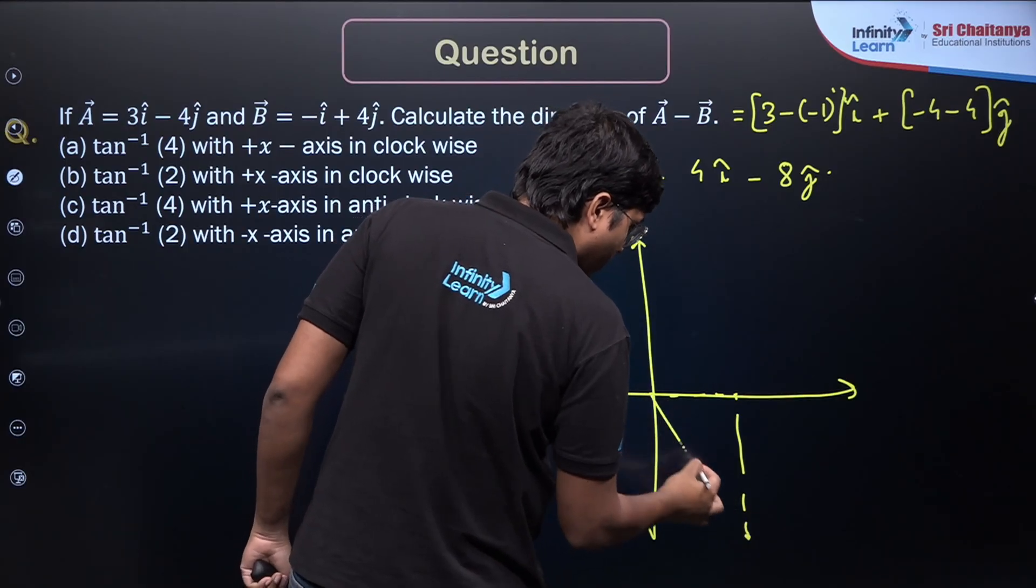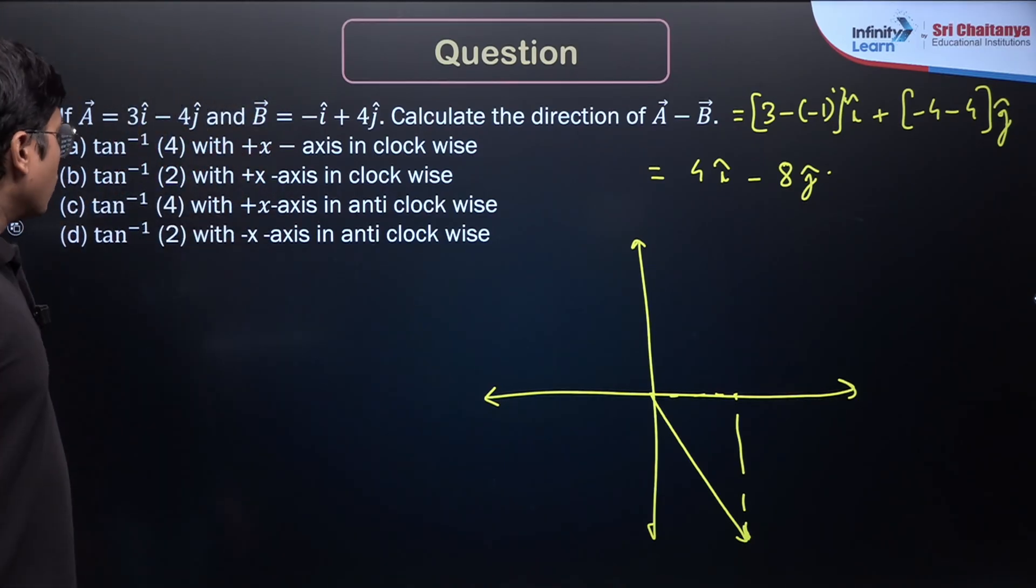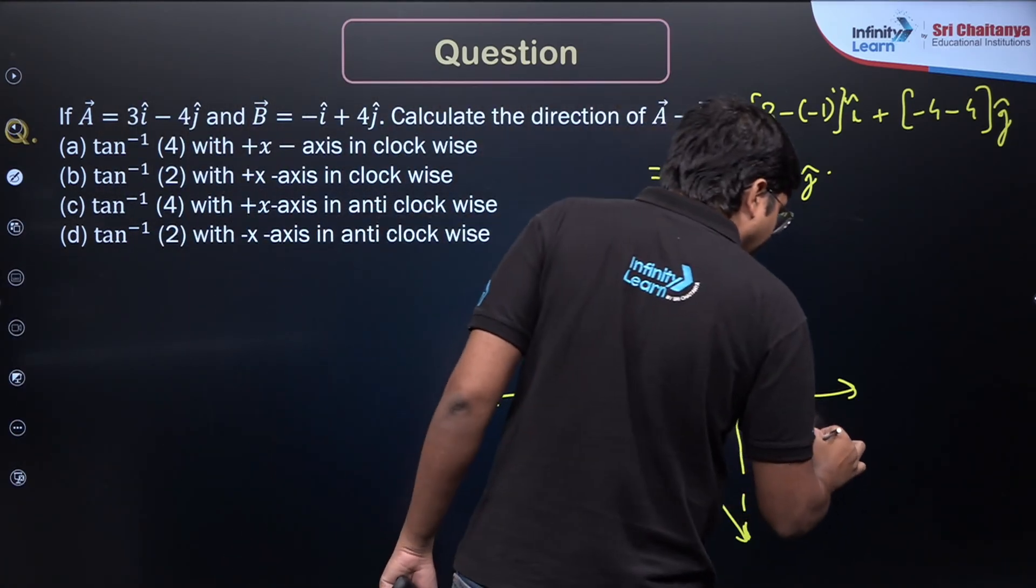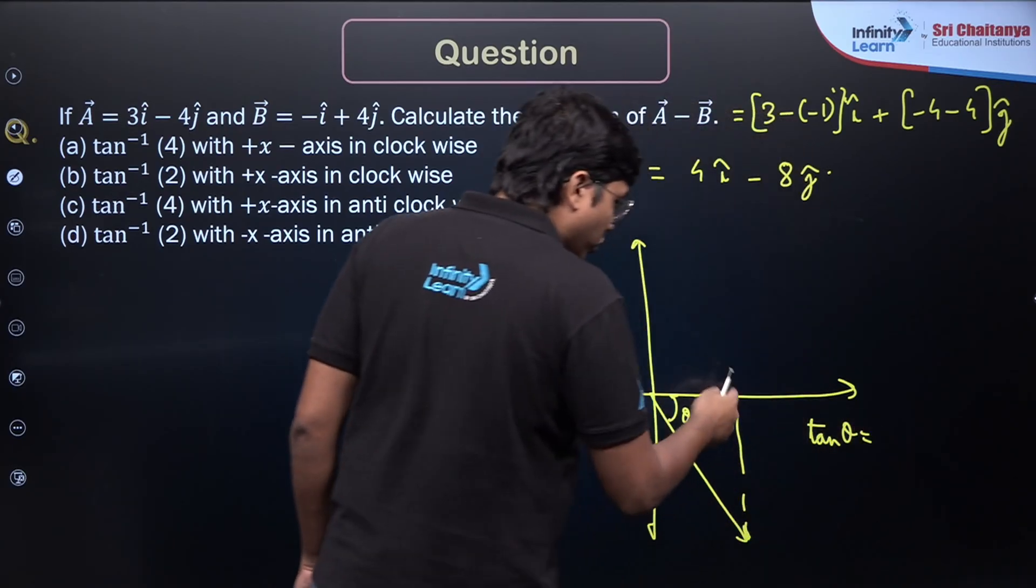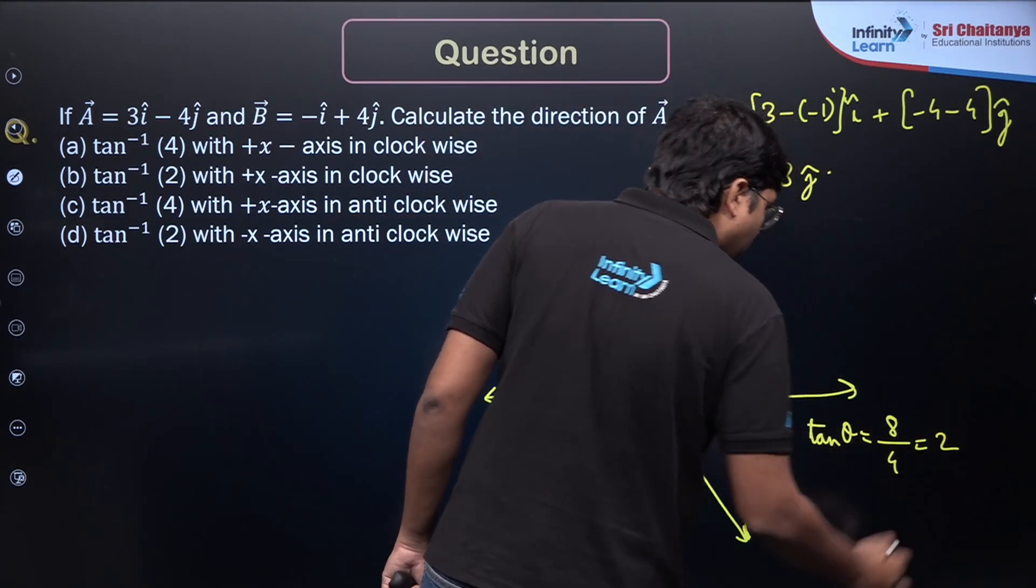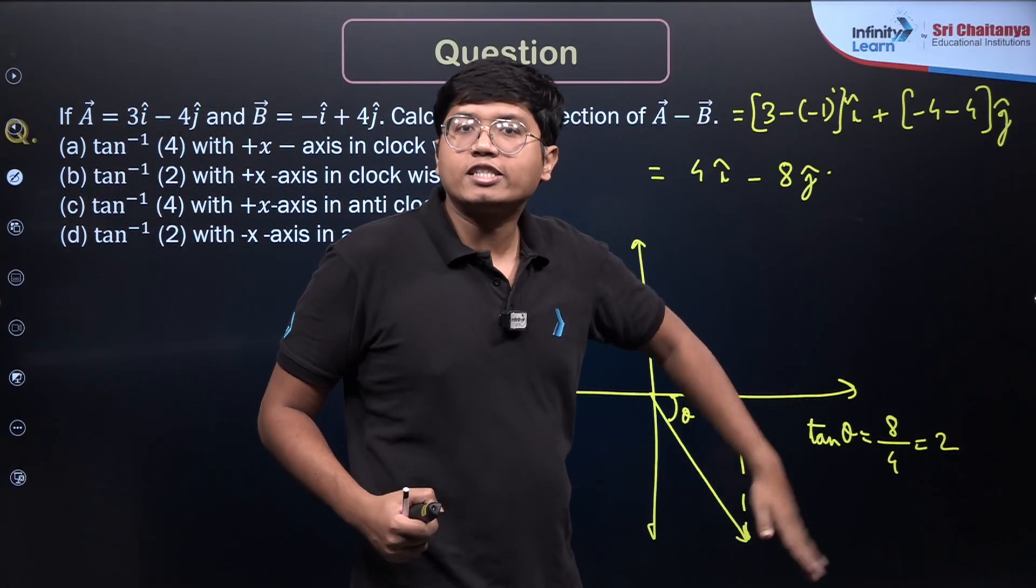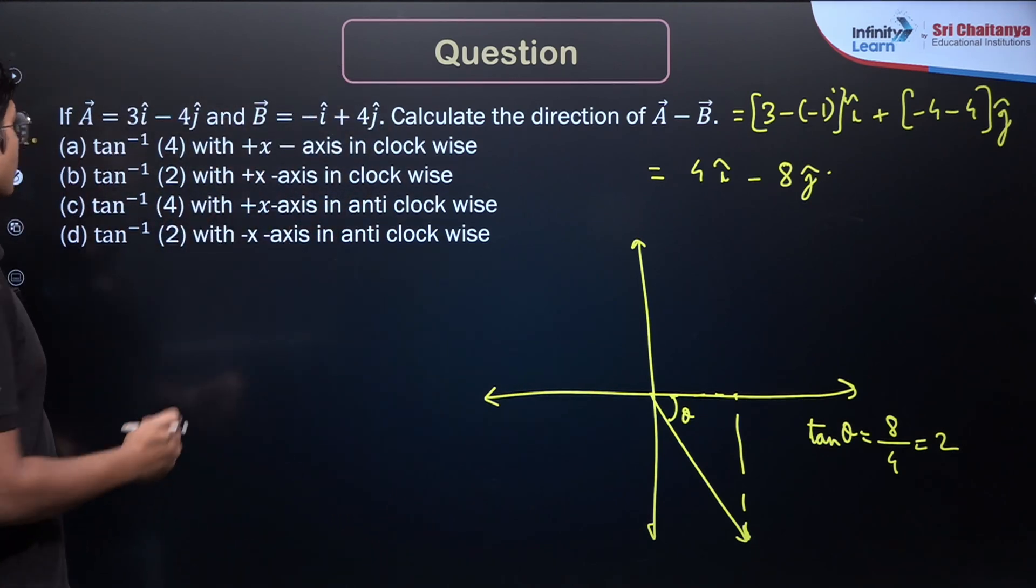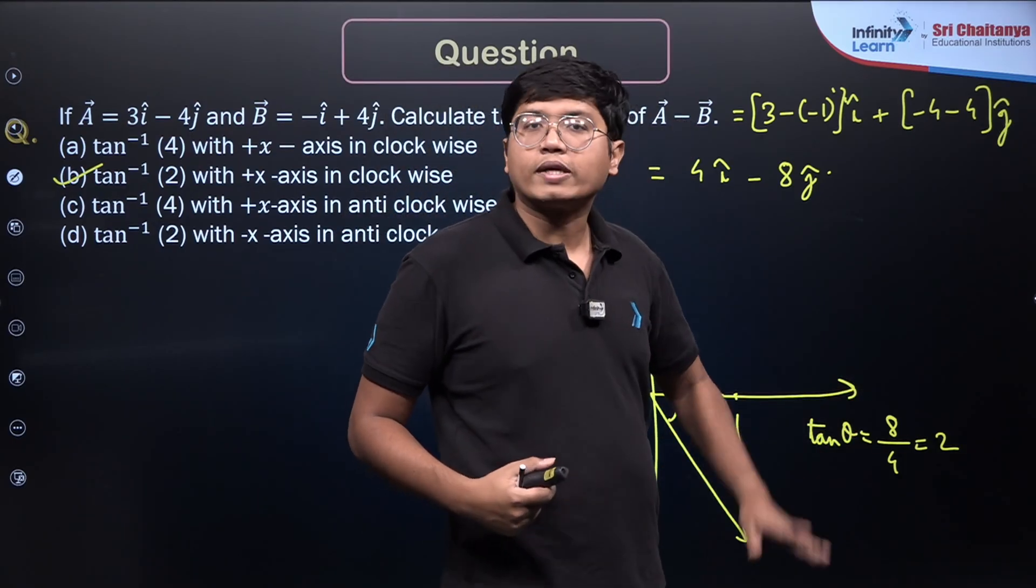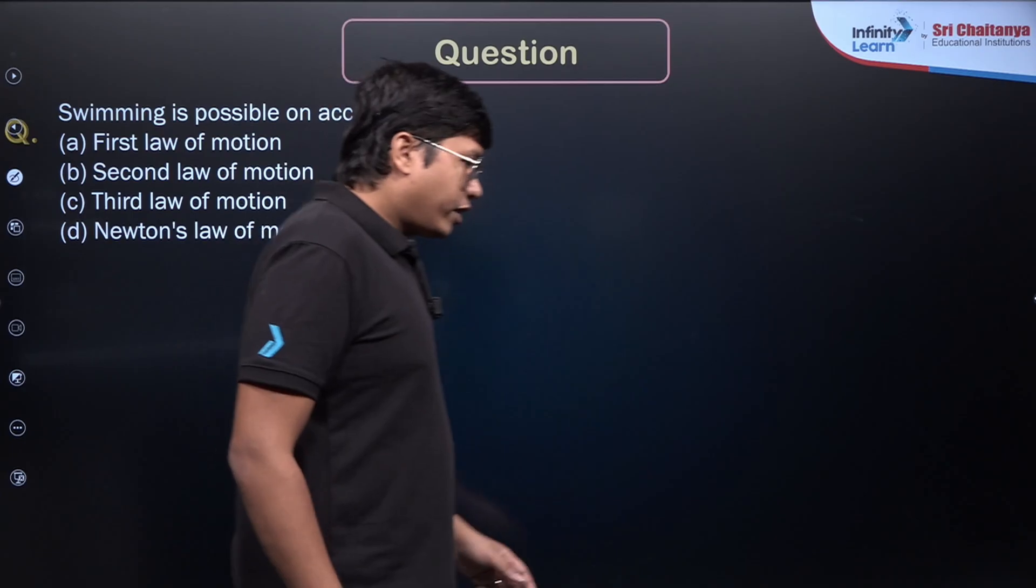So if I draw the x, y axis, 4 i cap minus 8 j cap means what? It is 4 units in this direction, minus 8 here. So the vector points like this, 4 i cap minus 8 j cap. Now over here, how do I find the angle? Let's pick this angle here, theta. Then tan theta is equal to this is 8 units divided by the base which is 4 units, which is 2. So theta is tan inverse of 2, and in which direction is it? It is in the clockwise direction from the x-axis. So it is option B. Tan inverse of 2 and from the positive x-axis, we have to turn clockwise to get to it.